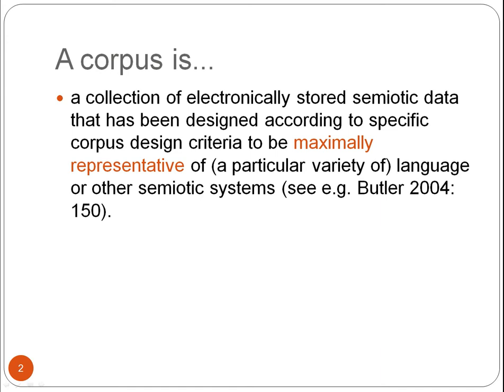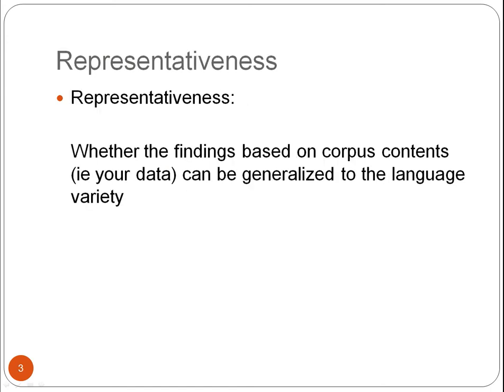What does it mean to be maximally representative of a variety of language or other semiotic system? In other words, what does representativeness mean? Representativeness is about whether the findings based on corpus contents — your data — can be generalised to the language variety.